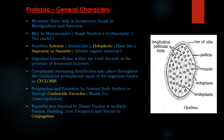When digestion occurs, cytoplasmic streaming and distribution take place throughout the continuous protoplasmic mass of the organism, and this process is known as cyclosis — one of the characteristic features of protozoans. Respiration and excretion take place by the general body surface or through the contractile vacuole, and the role of the contractile vacuole is mainly osmoregulation. Reproduction may be sexual as well as asexual. Asexual reproduction occurs by binary fission or multiple fission, budding, and cyst formation, while sexual reproduction occurs through the conjugation process.